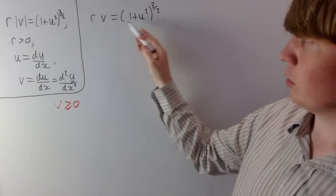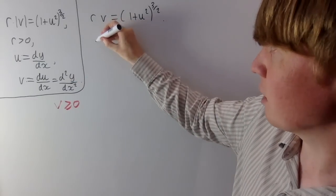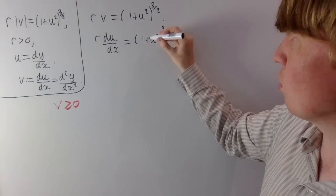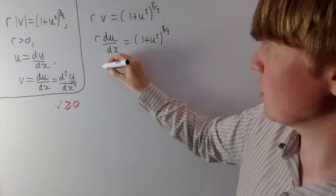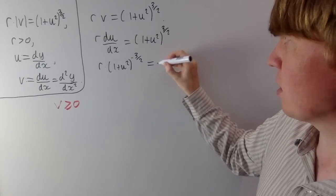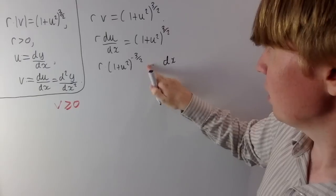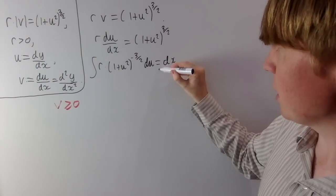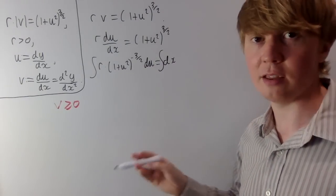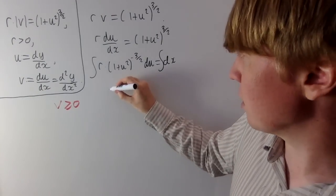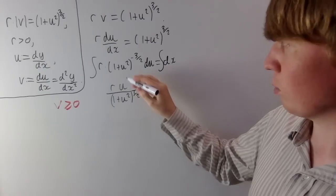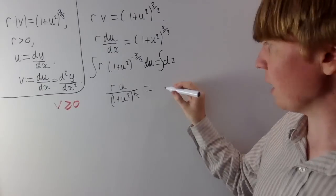We have r times du by dx equals 1 plus u squared to the power of 3 over 2 — again a separable differential equation. Separating gives r times 1 plus u squared to the power of minus 3 over 2 du equals dx. Integrating both sides: using a trigonometric substitution (u equals tan theta) or checking by inspection, the left gives r times u over 1 plus u squared to the power of 1 half. Integrating the right just gives x plus a constant, which we call minus a.